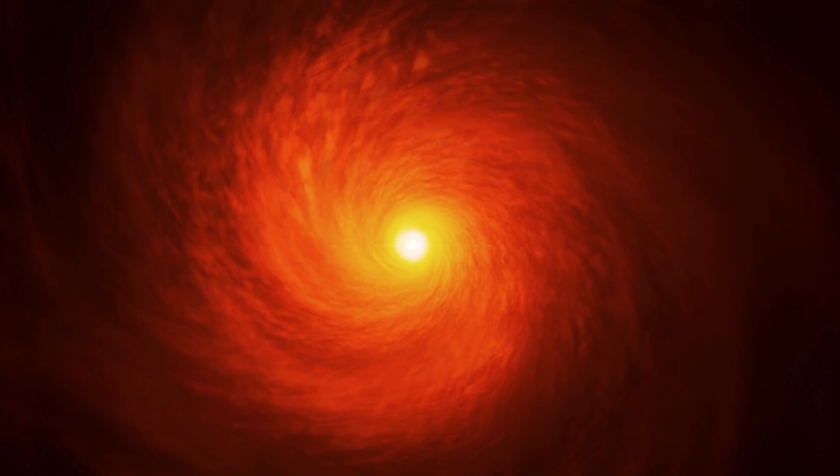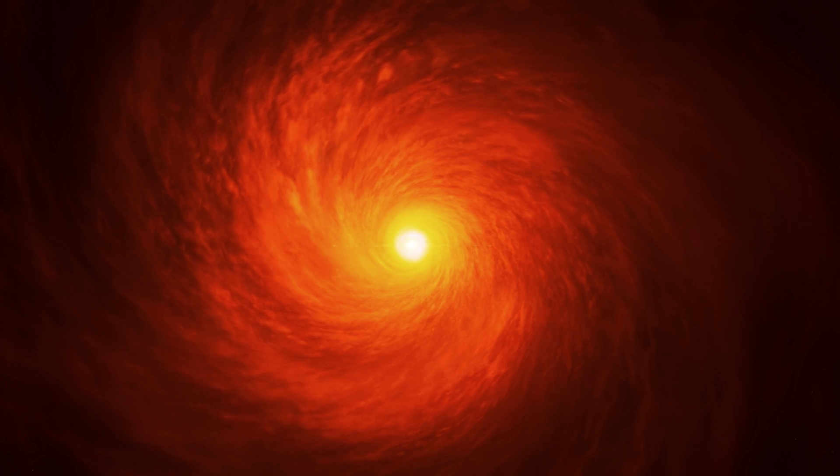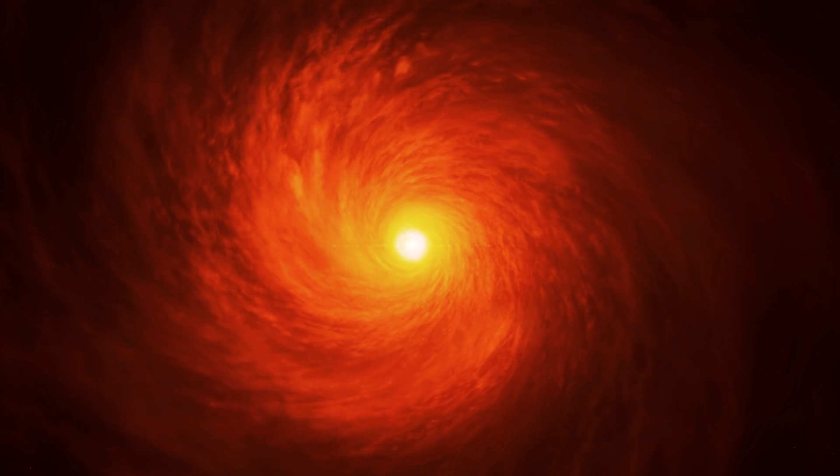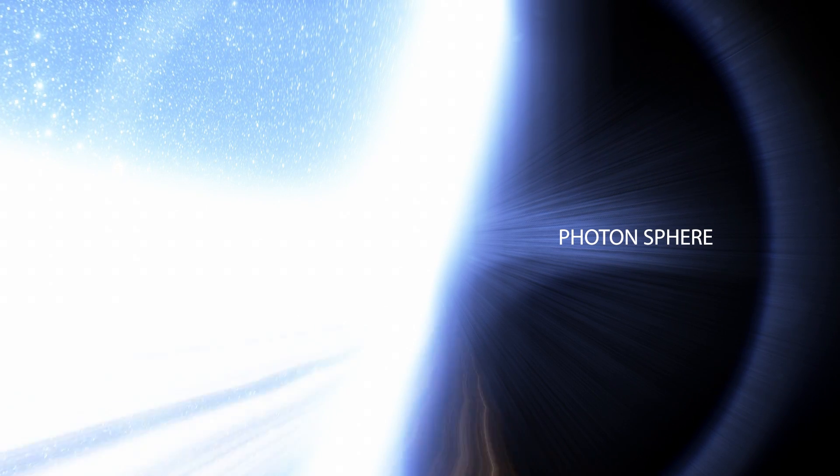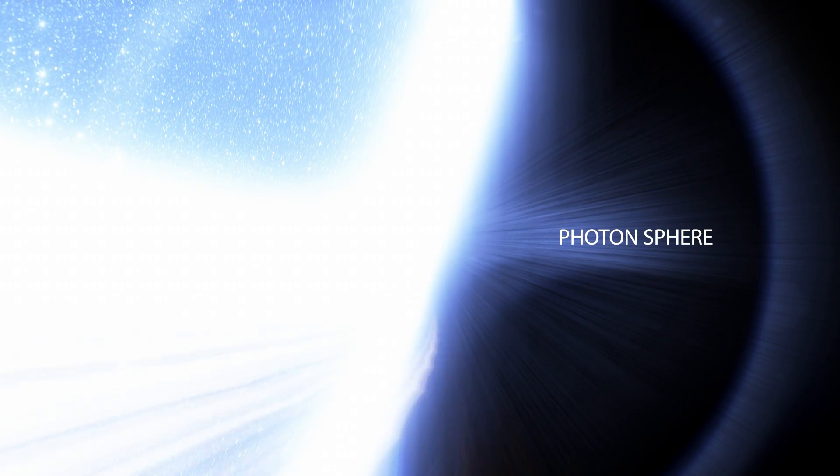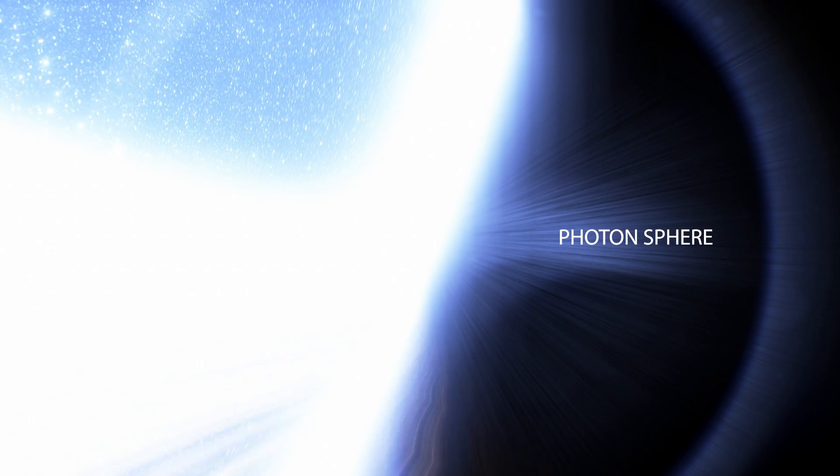This compact region affects its surroundings in extreme ways, warping spacetime itself and heating up the matter around it. Just above the event horizon, the boundary of a black hole where nothing can escape, there is a region called the photon sphere. That's where gravity is so strong that light can actually orbit around the black hole if it has a tangential trajectory.